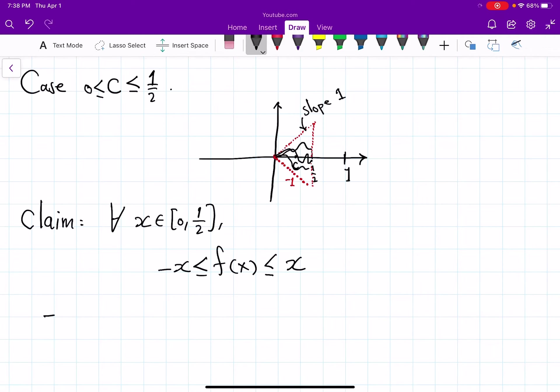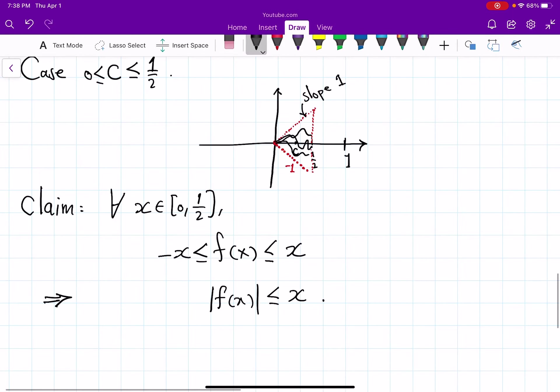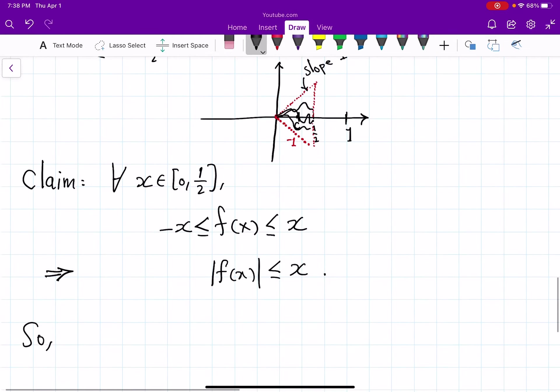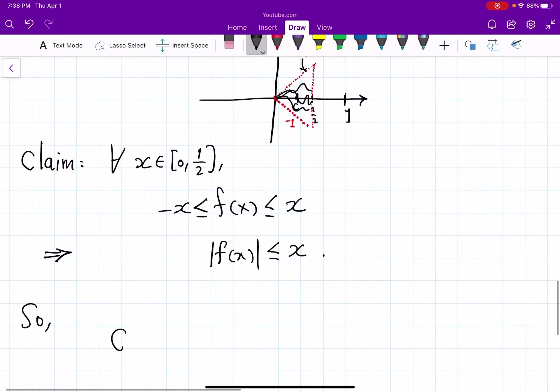And what you know then is that absolute value of f(x) is less than or equal to absolute value of x, which I don't need to put an absolute value I can just put x. And remember this is for x from 0 to 1 half. And then c was some point before we reach 1 half.